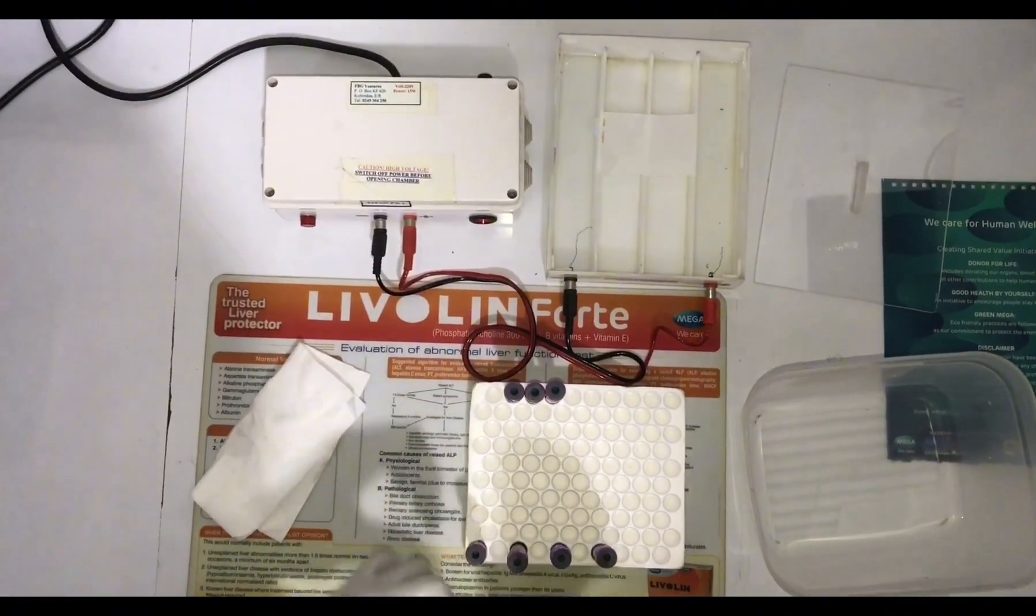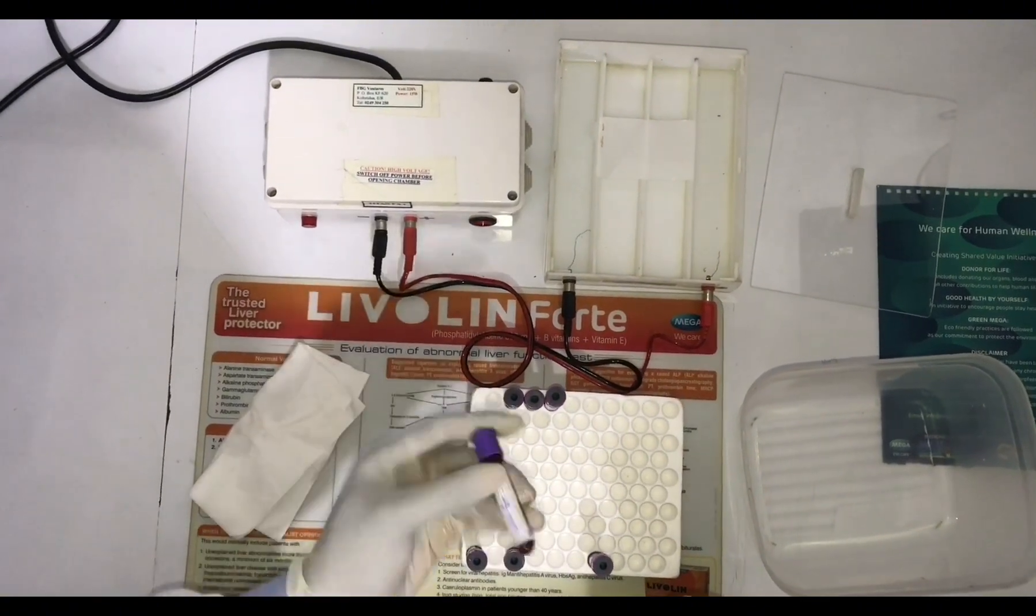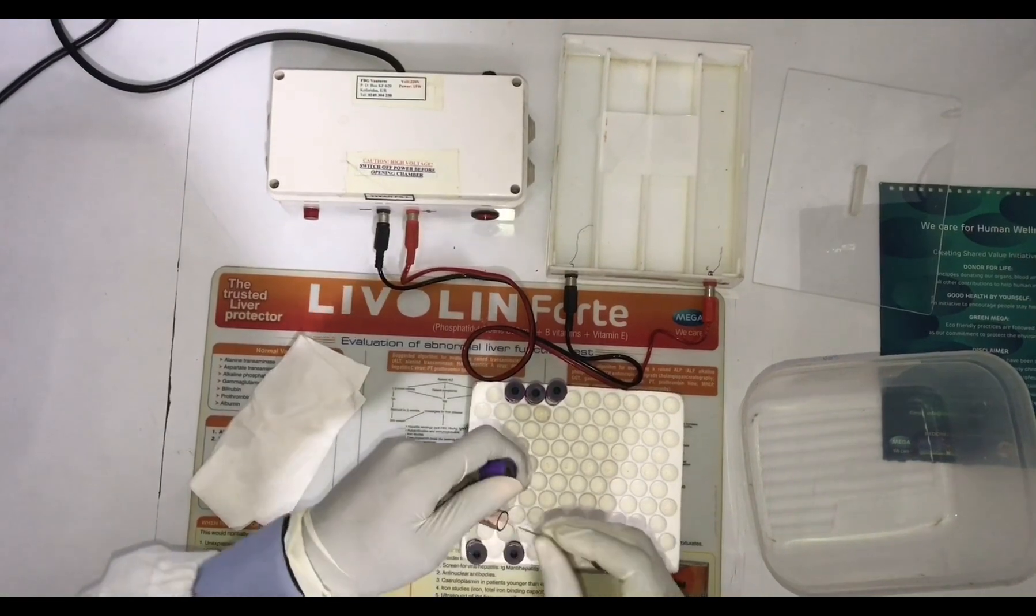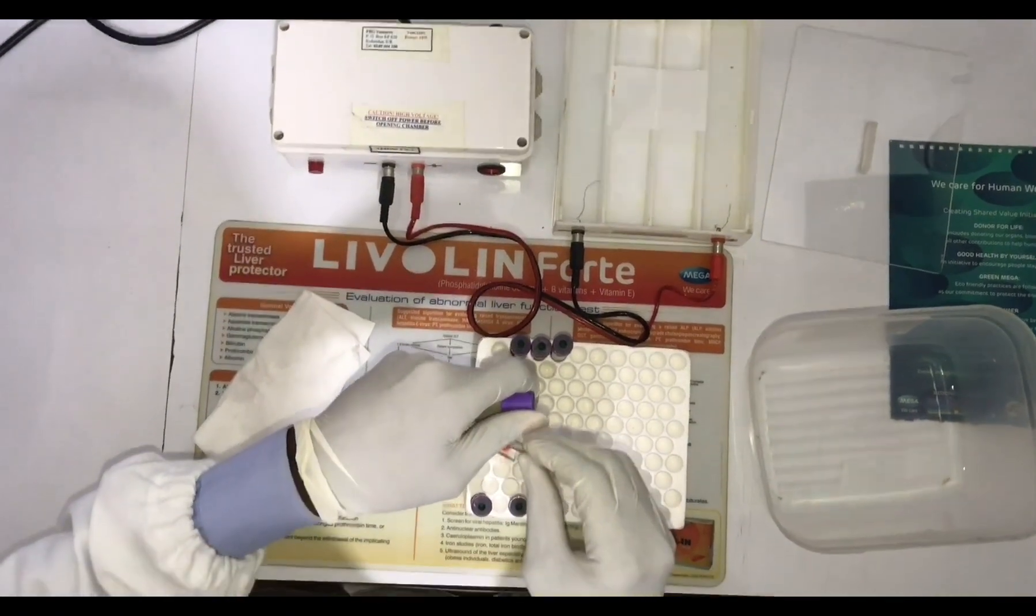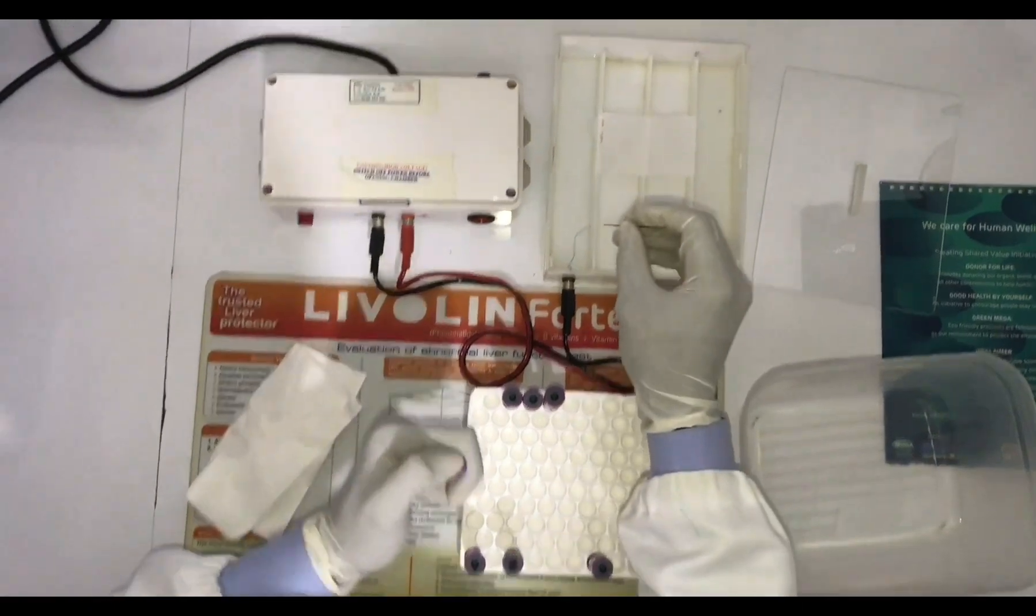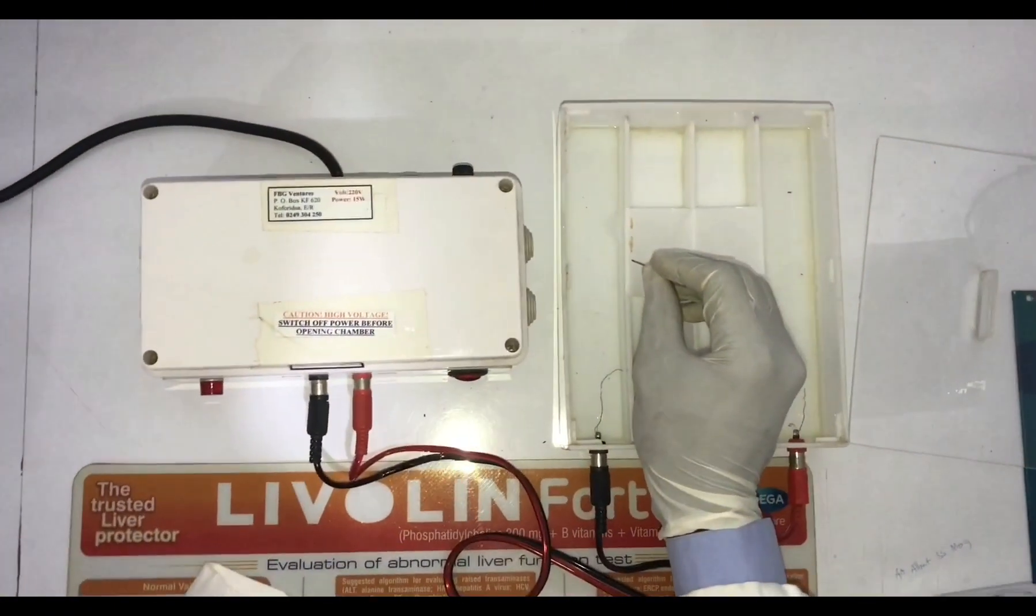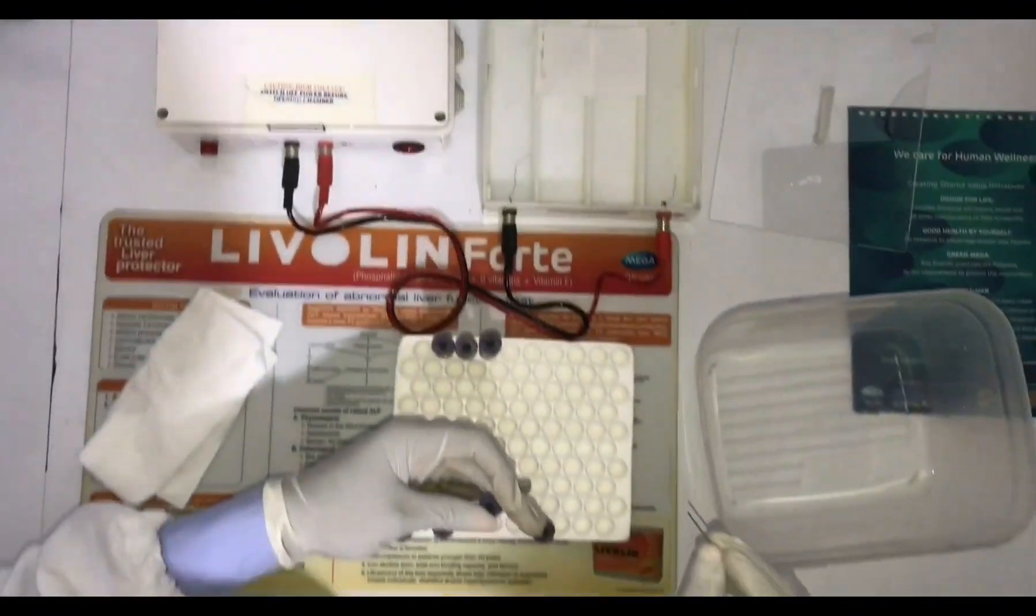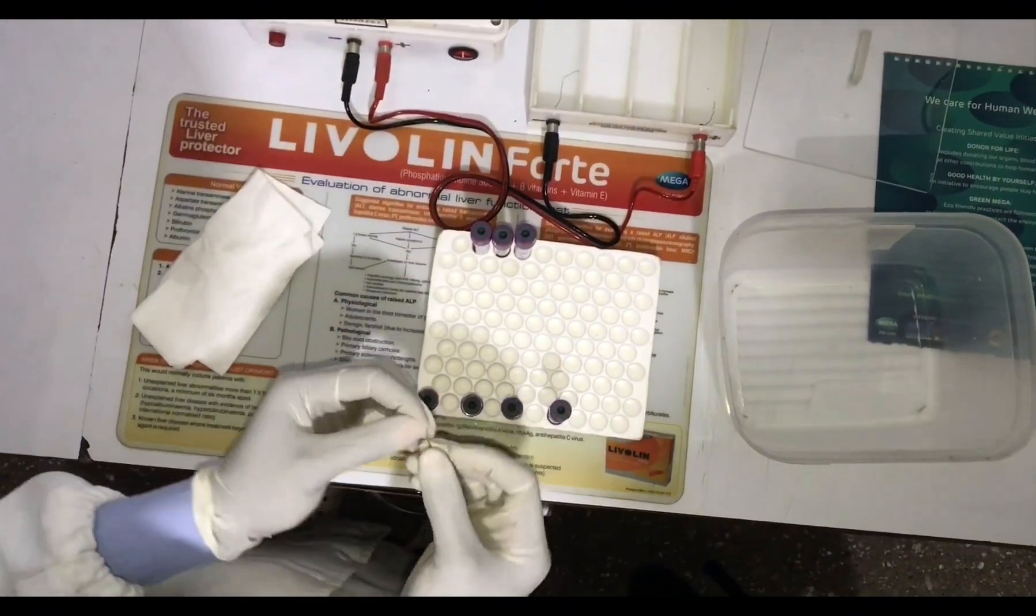From there we are going to take the next control which is the AS control. You dip it in as well, just as we've done for the two samples. You make a line which is literally the third line now on the cellulose acetate paper, and then you cover the sample and put it down.